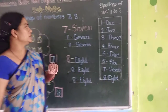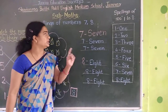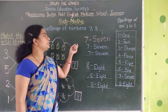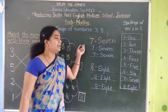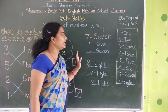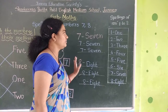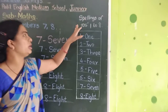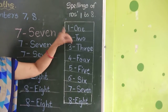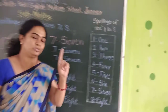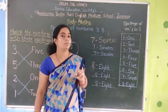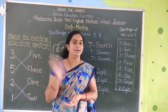So students, what is your homework? You have to write the spellings of numbers 7 and 8 half a page each. Then sequentially write the spellings of numbers 1 to 8 one time. You should complete your homework regularly. Bye bye.